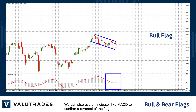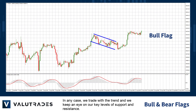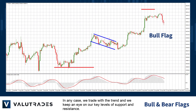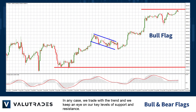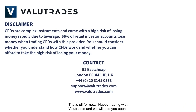We can also use an indicator like MACD to confirm a reversal of the flag, where the MACD signal line has crossed out of the histogram, or wait until the signal line passes above zero. In any case, we trade with the trend and keep an eye on both our key levels of support and resistance.